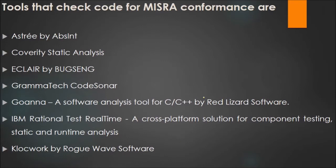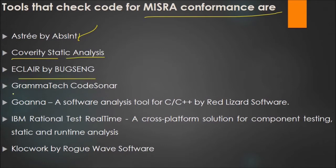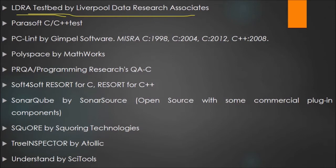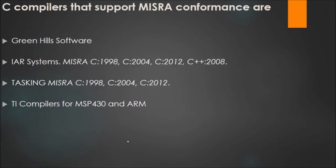Tools that check code for MISRA conformance include: AbsInt, Coverity Static Analysis, ECLAIR, Grammatech, LDRA, IBM Rational, Parasoft, PC-lint, Polyspace, PRQA, SonarQube, and Understand, among others. C compilers that support MISRA conformance include Green Hills Software, IAR Systems, Tasking, and TI compilers.